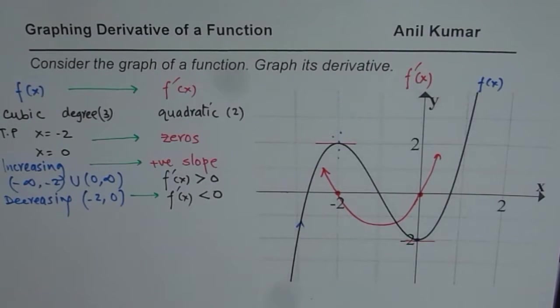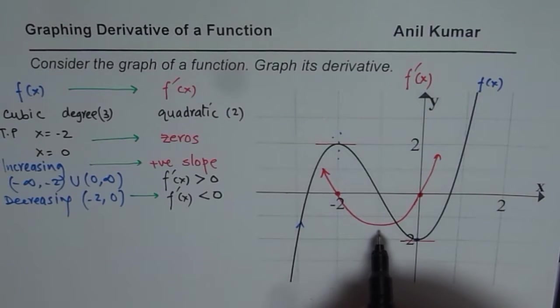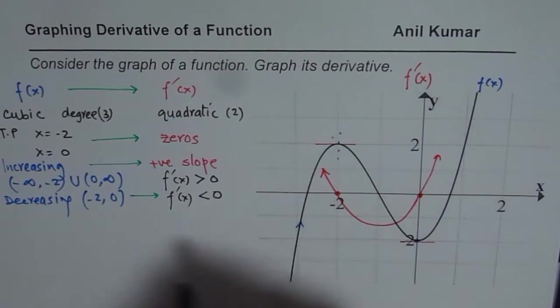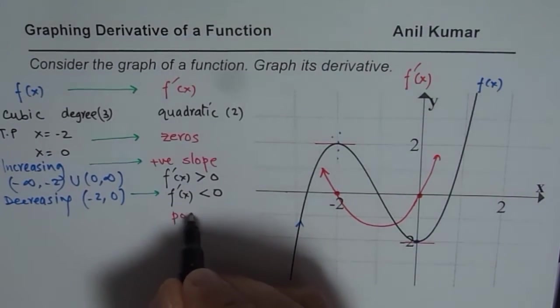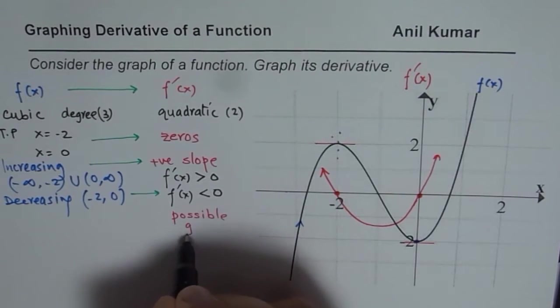So I hope these steps clearly inform us the procedure which we should follow to sketch graph of a derivative from the graph of the given function. And now, you should also remember one thing, that is to say, that there could be more than one graph. So this is not unique. So this is one possible graph.